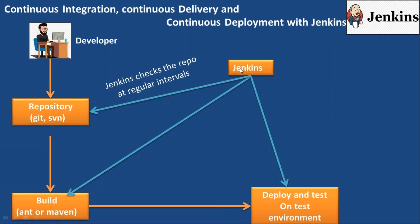So Jenkins is integrating the repository, build tool, and environment. This is the purpose and importance of Jenkins in DevOps. Jenkins is an automation tool — it automatically pulls the code from the repository, builds the application with the help of a build tool, deploys the application on the test environment, and tests it.